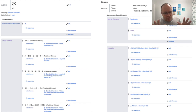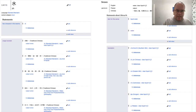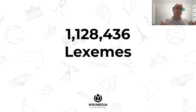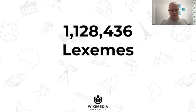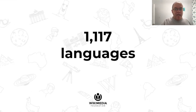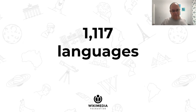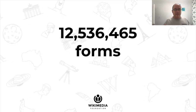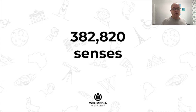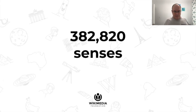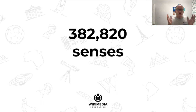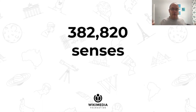The lexicographical database started quite a bit later than the ontological database, so it's not as far advanced. As of now, we have more than 1.1 million lexemes or words in Wikidata in more than 1,000 languages, covering more than 12.5 million different forms and close to 400,000 senses. That's Wikidata, offering both an ontological and lexicographical knowledge graph.